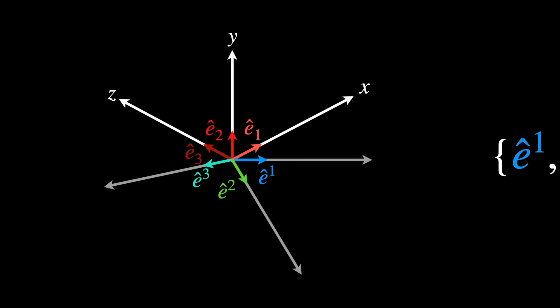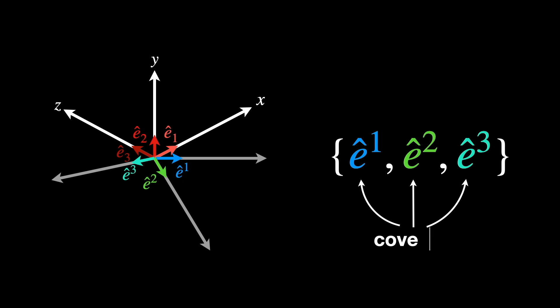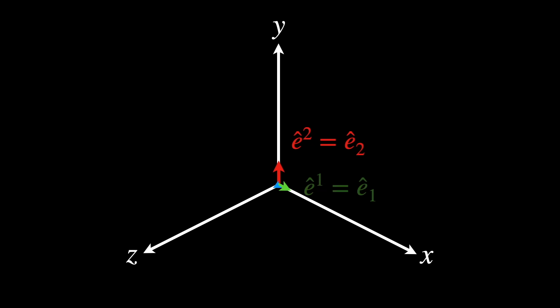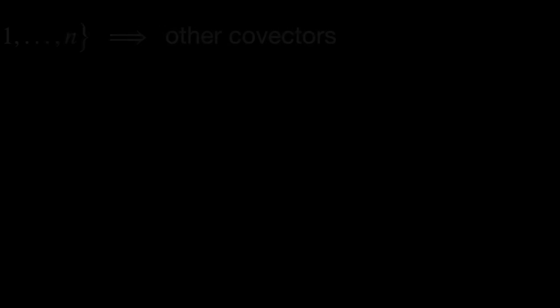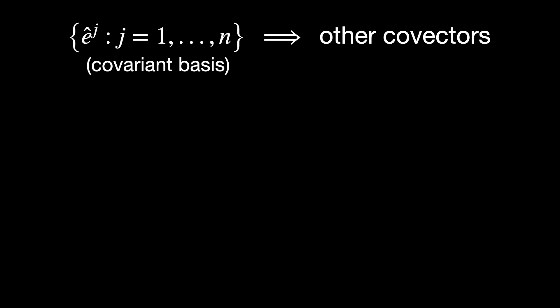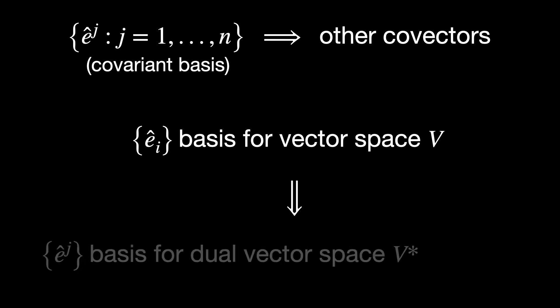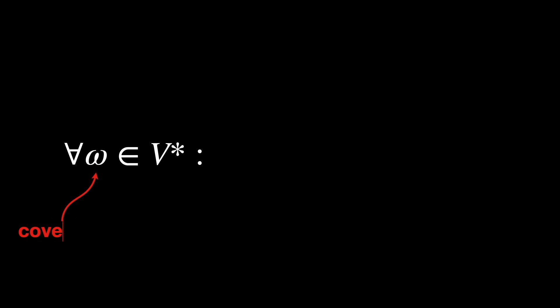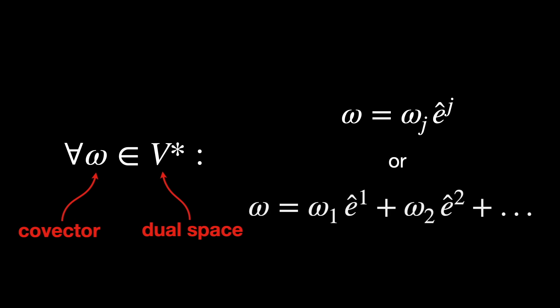These elements ê¹, ê², ê³ superscripts in the dual basis are called covectors. When the basis is orthogonal, the dual basis coincides with the original basis. So the basis êʲ superscript can also produce or describe other covectors as well. If eᵢ subscript is a basis for the vector space V, then êʲ superscript is its dual basis for its dual space V*. Any covector ω in V* can be written as ωⱼ êʲ, subscript and superscript, respectively. Or simply as the sum ω₁ê¹ plus ω₂ê² and so on.